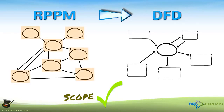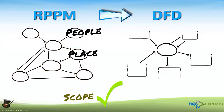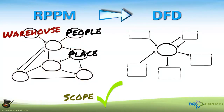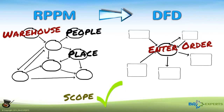Circles on an RPPM represent people or places, so they naturally have a noun name. Circles on a DFD, however, represent processes, which have a verb-object name — do something — and are in scope for our project.